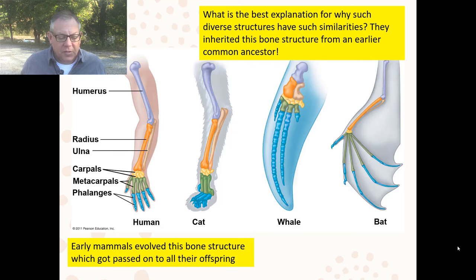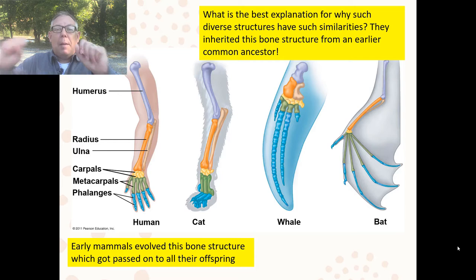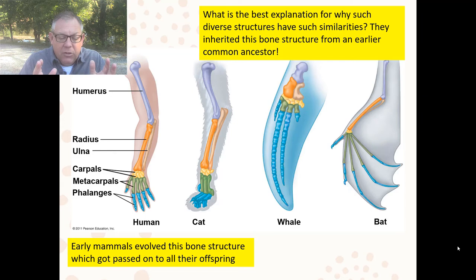Here's another figure showing a cat and a whale — used very differently, but the underlying bone structure is very similar. Early mammals evolved this bone structure and passed it on to all offspring. Bats didn't have to invent a whole new wing, and whales didn't have to invent a whole new flipper — there was already something there that just got modified based on the new environment. What's the best explanation for these different species having very similar structure? Common ancestry.